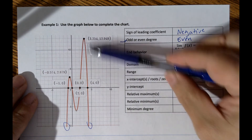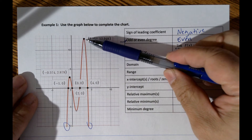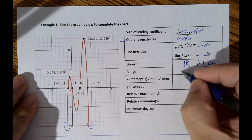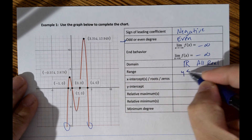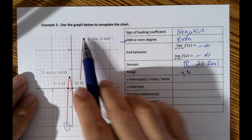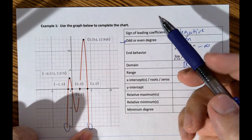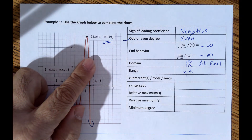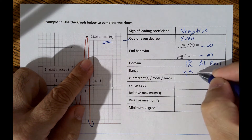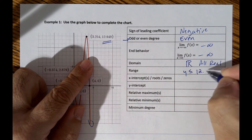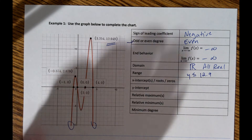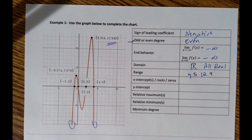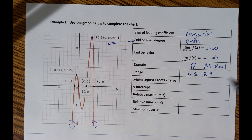Range refers to the y-values. This graph has a highest y-value, meaning all y-values are less than or equal to that point. The highest y-value on this graph is 12.9, so the range is y less than or equal to 12.9, rounded to the nearest tenth.